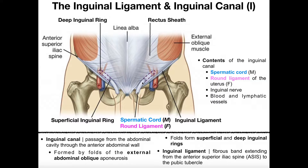This cord that runs through the inguinal canal in males is called the spermatic cord. In women, there are no testes, so they have an equivalent structure called the round ligament. Both of these structures move through the inguinal canal, connecting things that are more superficial through this wall into the abdominal or pelvic cavity. Other structures that run through the inguinal canal include inguinal nerves and blood and lymphatic vessels.